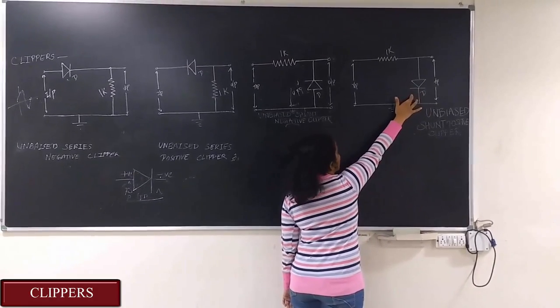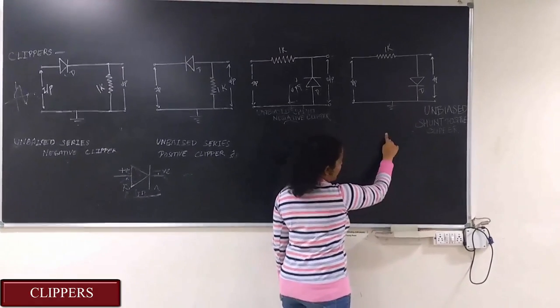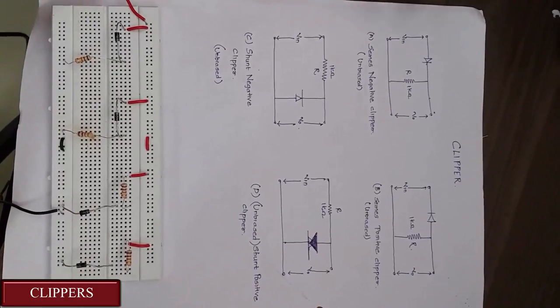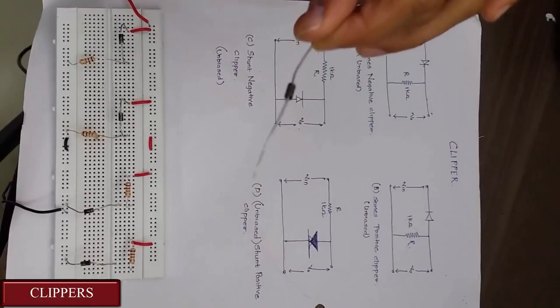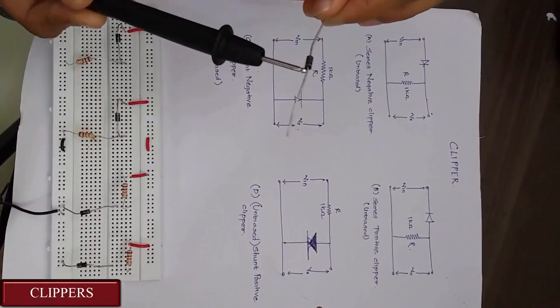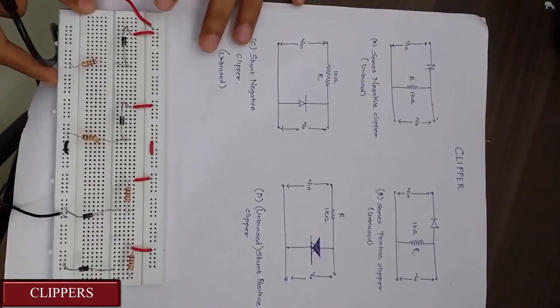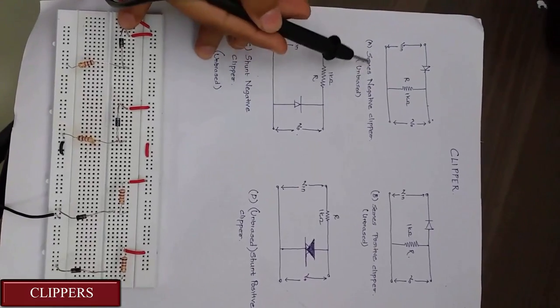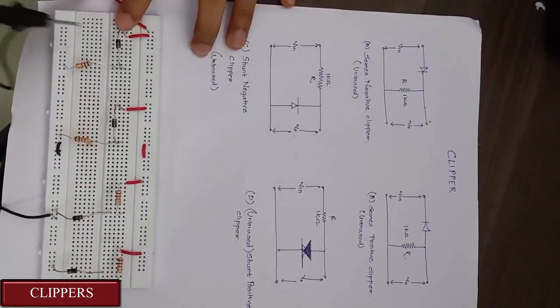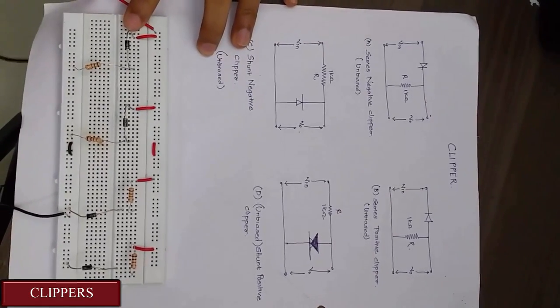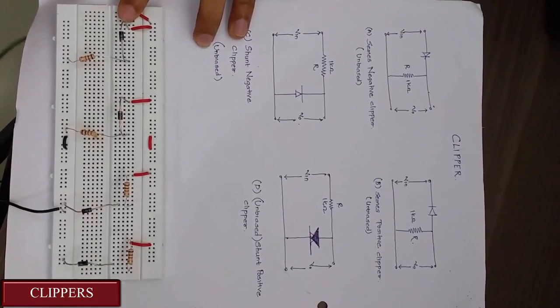This is the circuit implementation of clipper. This is how a diode looks and this silver ring here indicates the negative terminal. Now accordingly I have connected the unbiased series negative clipper. This is the circuit for unbiased series negative clipper. Now I have already given the input. Now let's see the output.